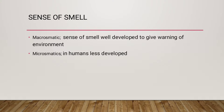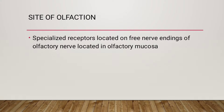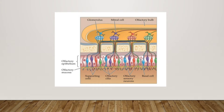The sense of smell is well developed to give warning of the environment. In micro-osmetics, humans it is less developed. The site of olfaction has specialized receptors located on free nerve endings of the olfactory nerve, located in the olfactory mucosa.